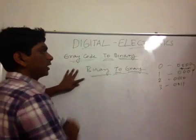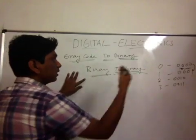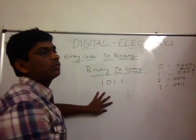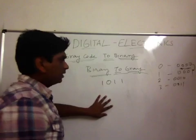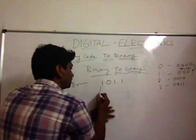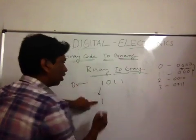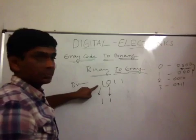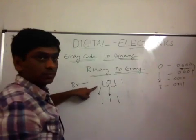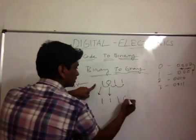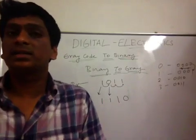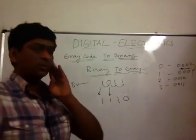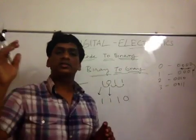Binary to gray: my given binary number is 1011. I have to convert this into gray code. Firstly, I will drop down the first digit as it is. Then add this digit to the next one: 1 plus 0 will be 1. Then 0 plus 1 will be 1. Then 1 plus 1 will be 0 — with a carry of 1, of course, but you avoid the carry. When you are converting these, just forget about the carry.